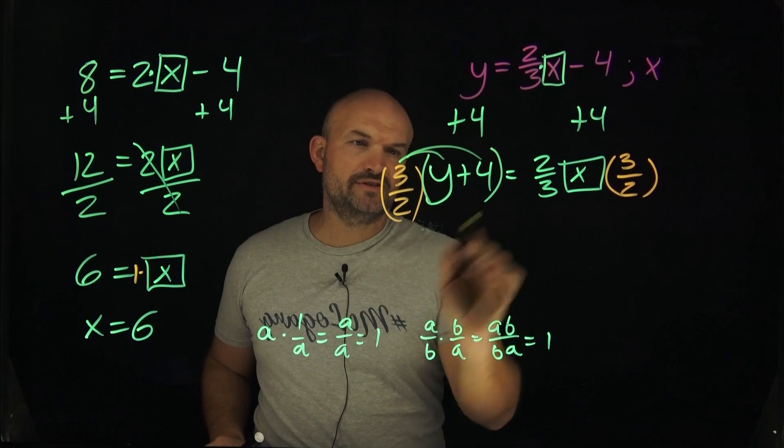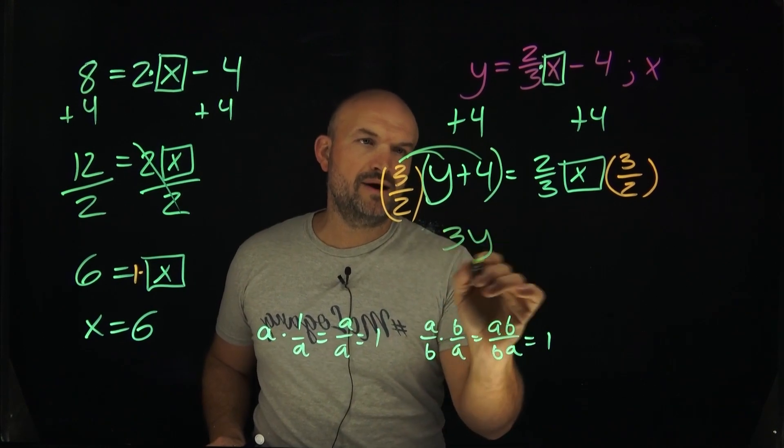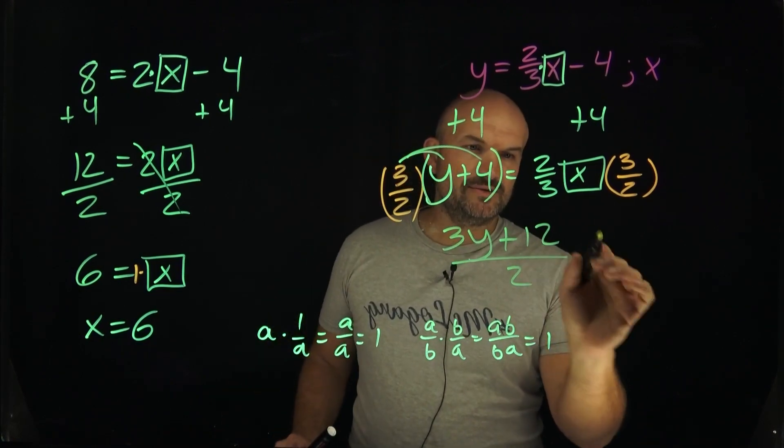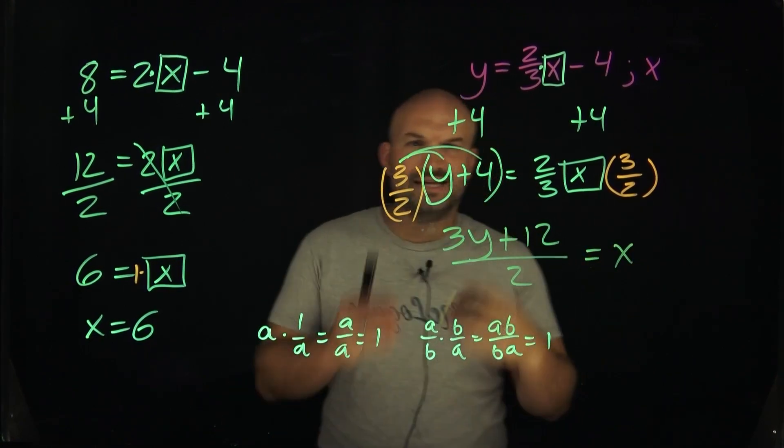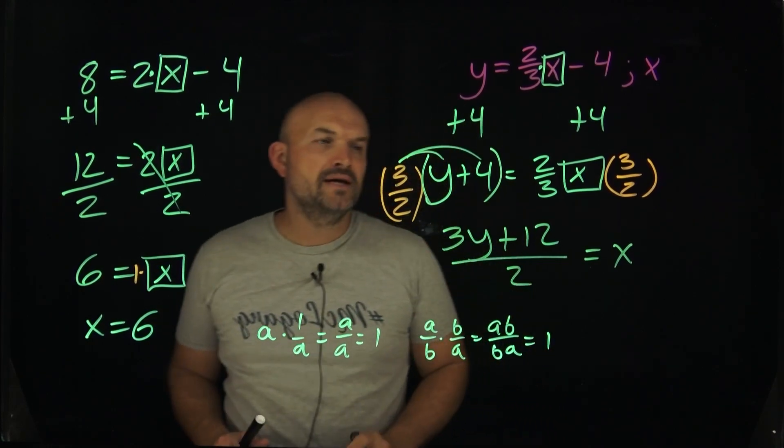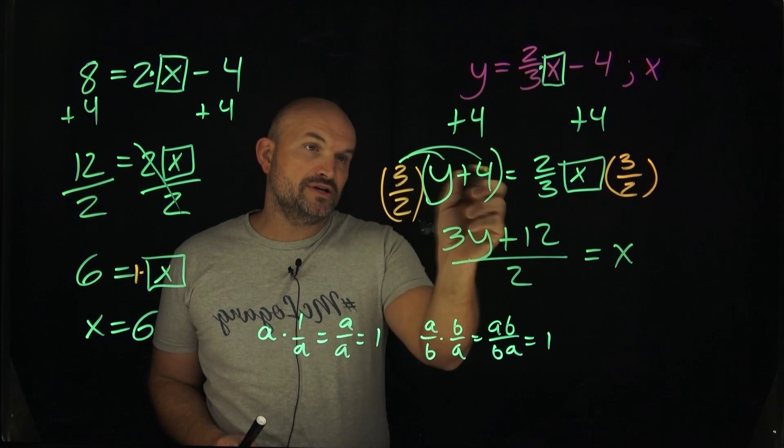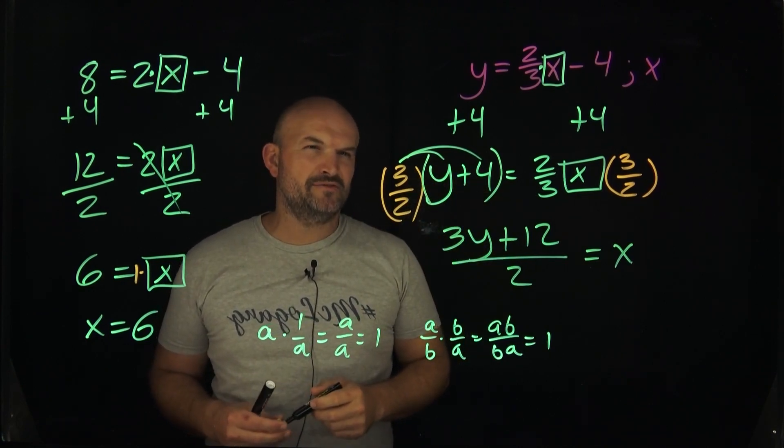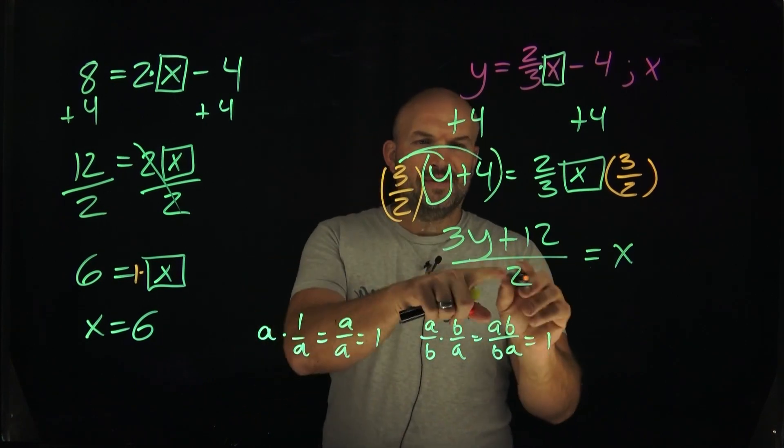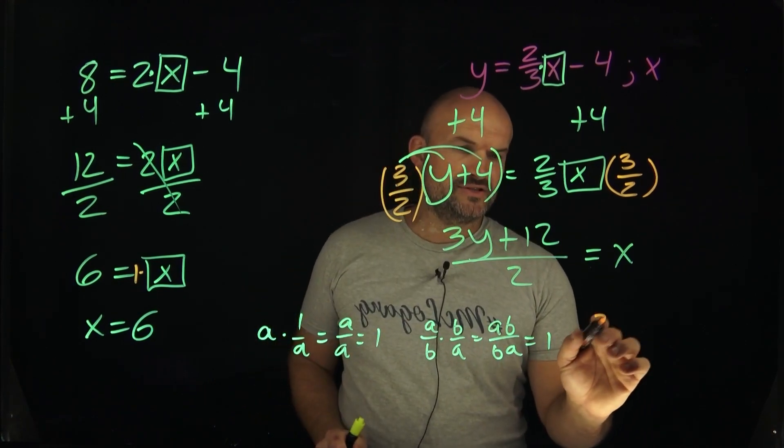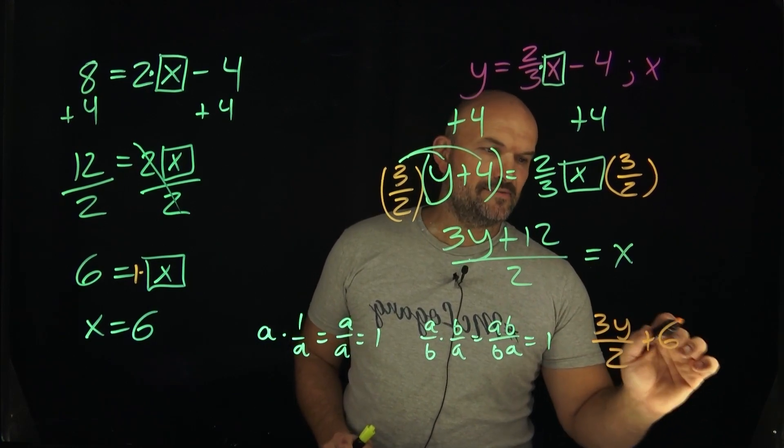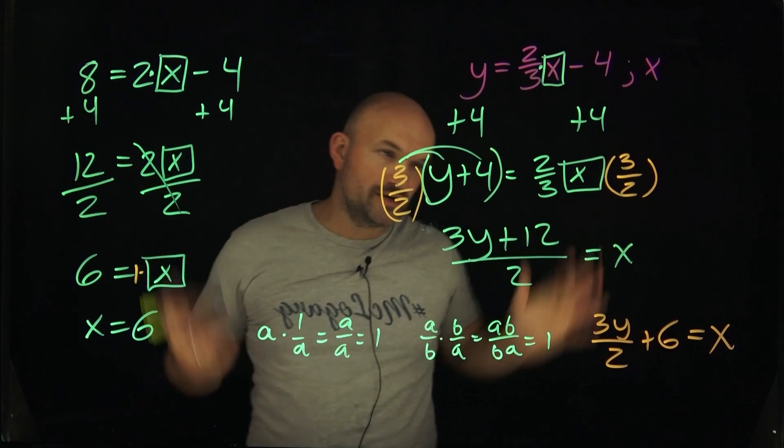Now you could distribute that and leave them separated, or you could just leave this as one full expression. A lot of times what I'll do is distribute the 3 but then leave the 2 as the denominator. So therefore I'll have (3y + 12)/2, and that's going to equal my x. A lot of times I like the factored out version, so this is a fine answer as well. Or you could actually separate that even further. You could divide those 2 into both examples, so you have (3y/2) + (12/2), which is (3y/2) + 6 = x. That's another variation of that.